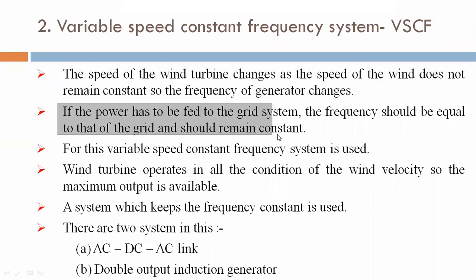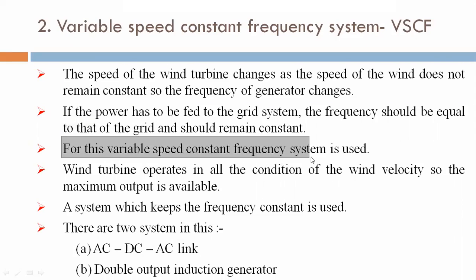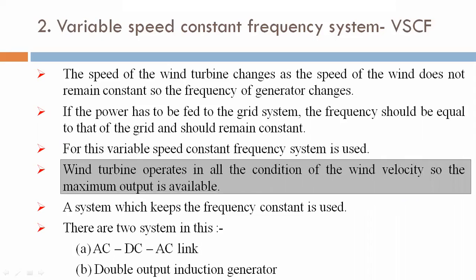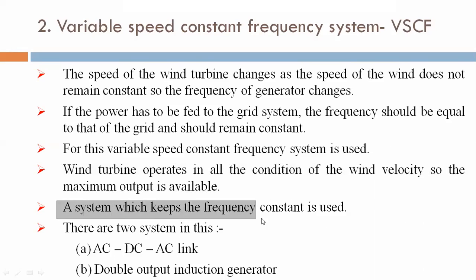If the power has to be fed to the grid system, the frequency should be equal to that of the grid and should remain constant. The turbine operates in all conditions of wind velocity so the maximum output is available. A system which keeps the frequency constant is used.